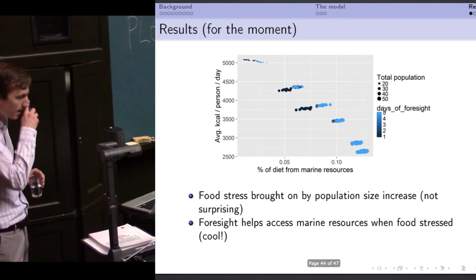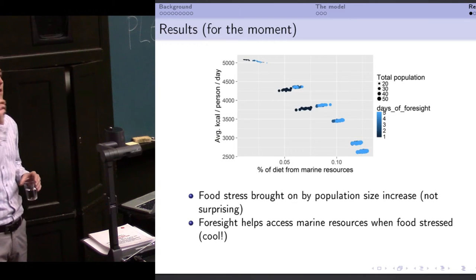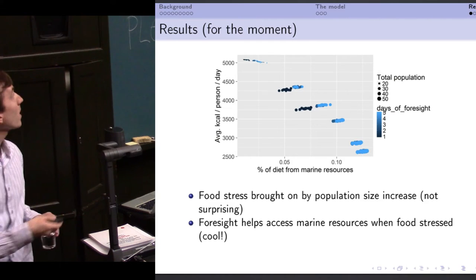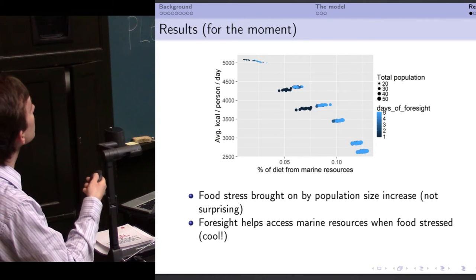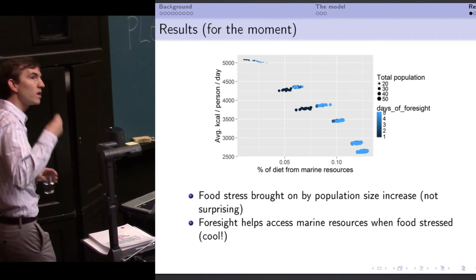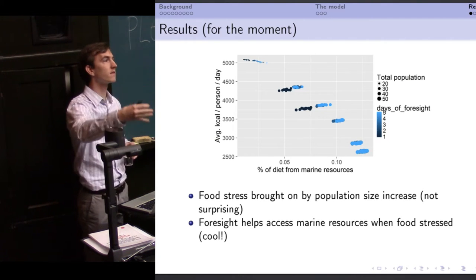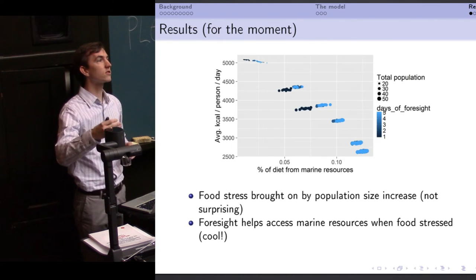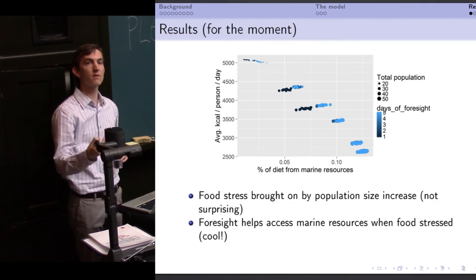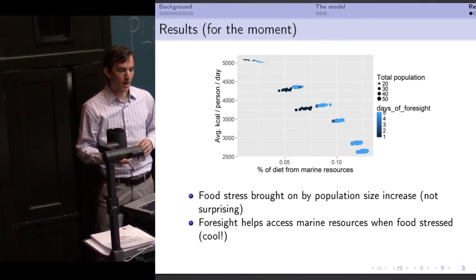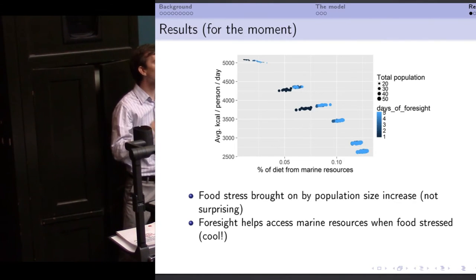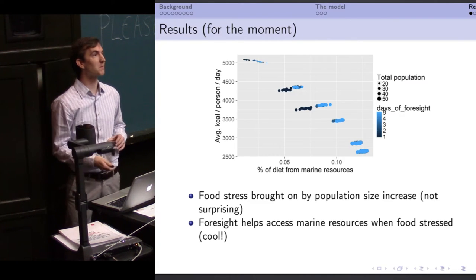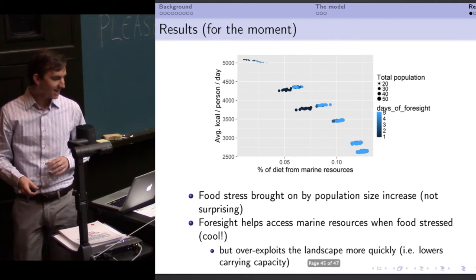That's not so surprising. We expected that. What is interesting is that out of these, the dot size being the population size, out of a particular population size, sort of one little stripe through the middle, the bluer dots are the ones who are forecasting, the ones who are anticipating future returns. For a constant population size, the forecasters do slightly better, both in terms of their average calories and in terms of the proportion of marine resource that they're using. So, they are successfully anticipating the tidal returns and benefiting from that, which is cool, which is exactly what I wanted them to do. So I like that.